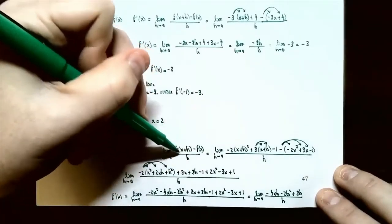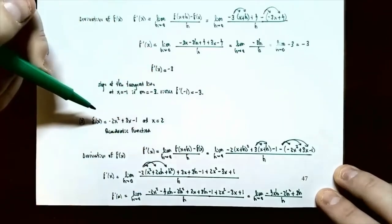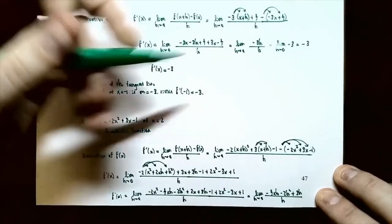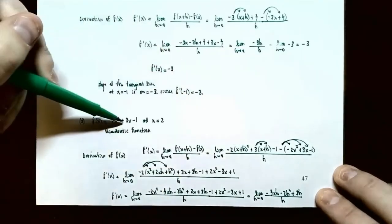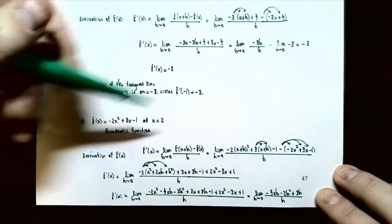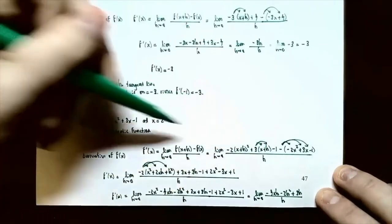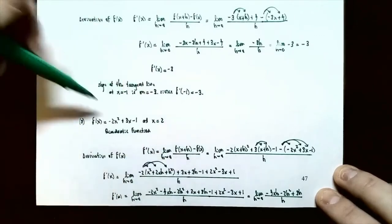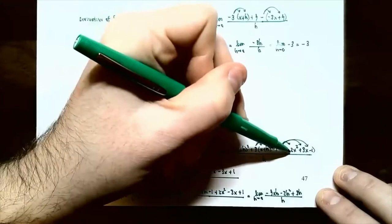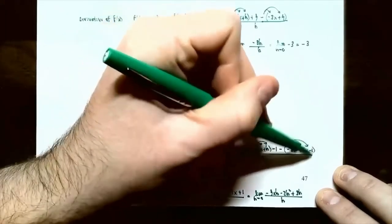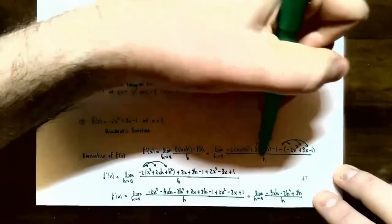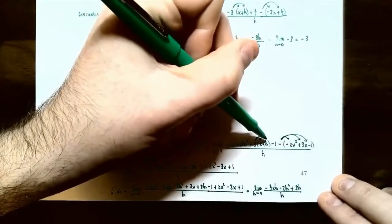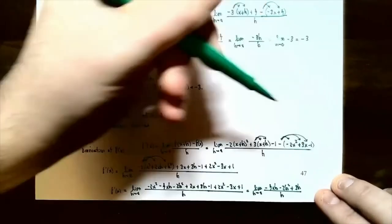Calculate each part of the difference quotient. For f of x plus h, replace all x's with x plus h. That gives negative 2 times the quantity x plus h squared, plus 3 times x plus h, minus 1. Then subtract f of x — the original function — so subtract negative 2x squared plus 3x minus 1 in parentheses. Divide the entire numerator by h. Now expand: 3 times x plus h gives 3x plus 3h, and distribute the negative through all three terms of f of x.